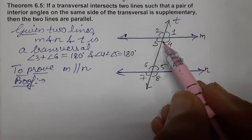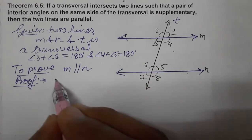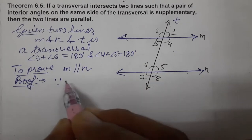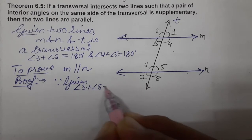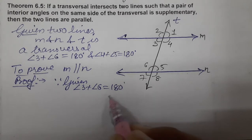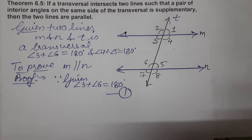First thing is given to us: angle 3 plus angle 6 equals 180 degrees. Since it is given to us that angle 3 plus angle 6 equals 180 degrees, this is equation number one.